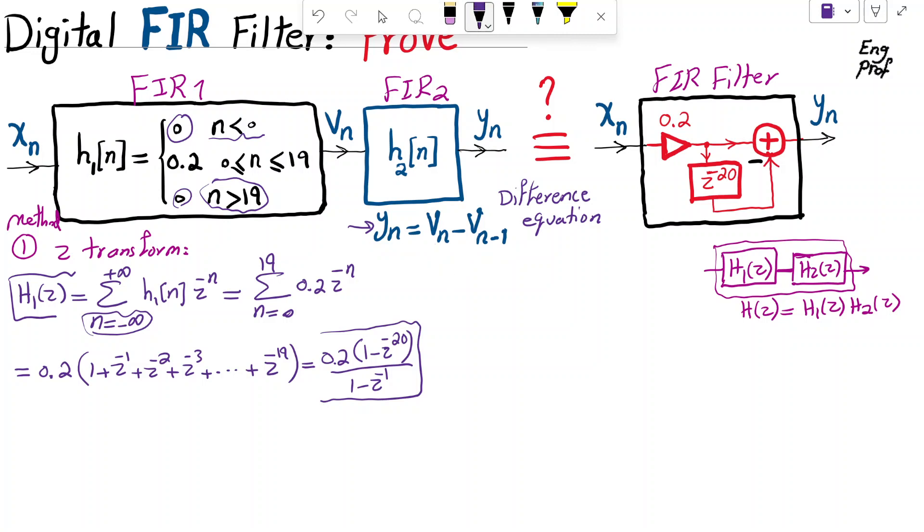If we take a Z transform out of this difference equation, obviously, Y of Z is V of Z minus, since it's a delay of N minus 1, that translates to Z minus 1 V of Z. Therefore, become 1 minus Z minus 1 V of Z, which is the input.